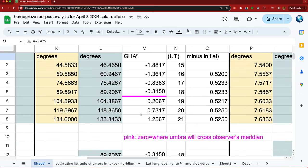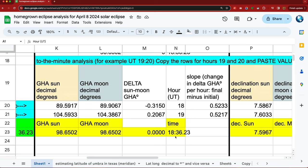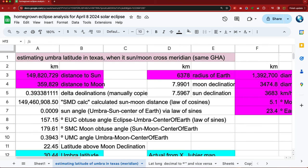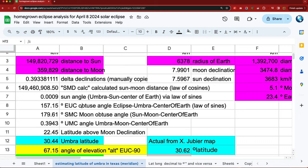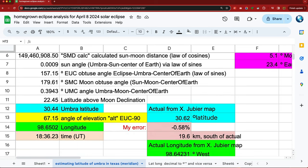And that pink line represents where the umbra will cross the observer's meridian. So that was my starting point. So I got the time, my calculated time of 18 hours, 36 minutes for universal time. Then on another page of the spreadsheet, I'm using some of the values, distance to the sun and the moon and the size, et cetera, as well as this time to figure out the latitude-longitude of this location, location X and angle of elevation.